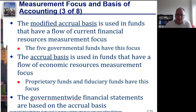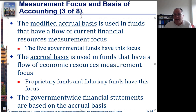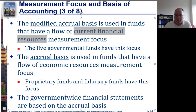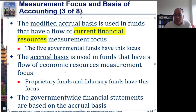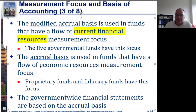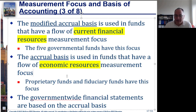Contrasting modified accrual versus accrual basis: all five types of governmental funds are going to use the modified accrual basis, which is focused on the flow of current financial resources. The accrual basis applies to proprietary and fiduciary funds, covering all economic resources as seen in financial accounting.